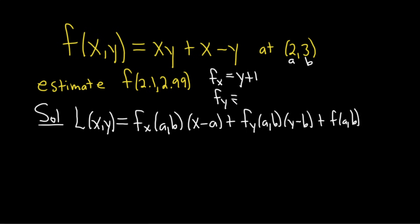When we compute fy, we treat all other variables as constants. The derivative of y is 1 and we're left with an x. The derivative of x is 0, and then the derivative of y is negative 1.